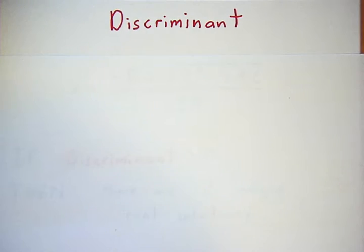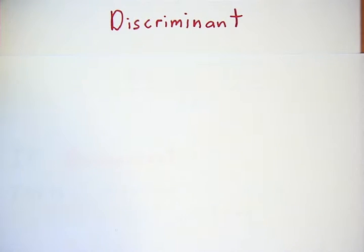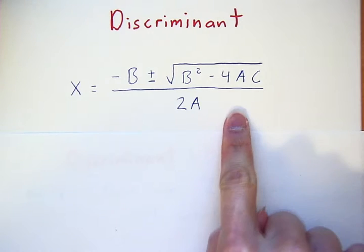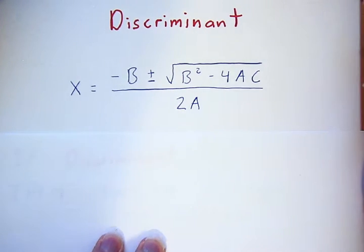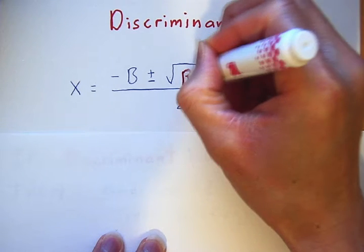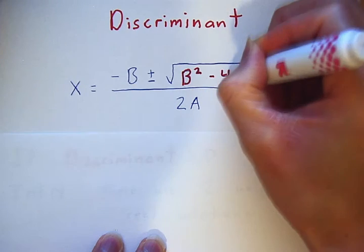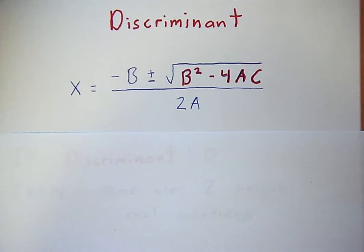This video is about the discriminant. The discriminant is a vocabulary word related to our quadratic equation. In our quadratic equation, this part underneath the square root — b squared minus 4 times a times c — that is our discriminant.